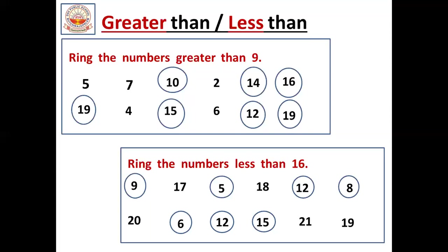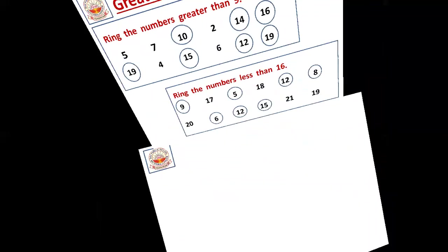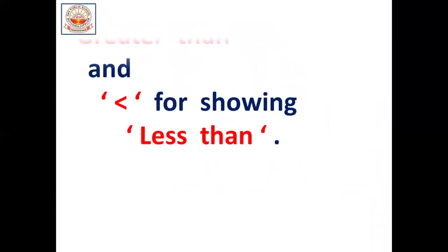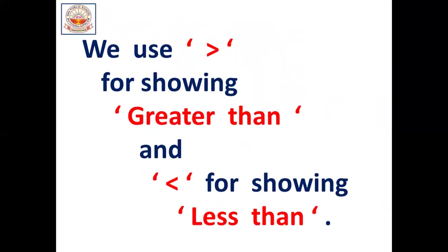These are the problems — greater than and less than. Greater than means after numbers, we should circle it. And less than means before numbers — back count — before numbers we should circle it, which are the small numbers compared to the given number. We use the greater than symbol for showing greater than, and the less than symbol for showing less than. Greater than and less than symbols are given here, children. See clearly and understand it.